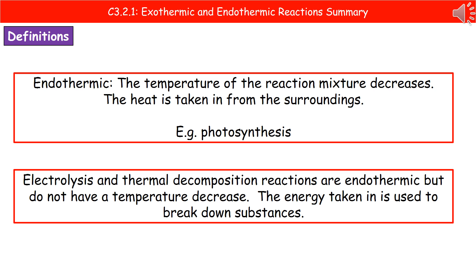The second type of reaction we need to know about are endothermic reactions. We can always identify these because the temperature of our reaction mixture decreases — so temperature drops. The heat is actually being taken in from the surroundings to cause that temperature decrease. A great example of this that we've already encountered is in photosynthesis.